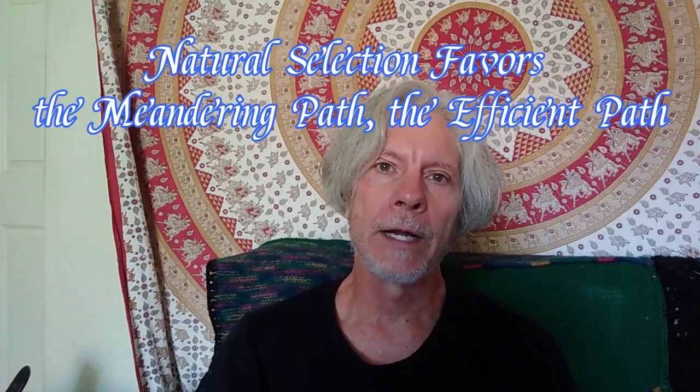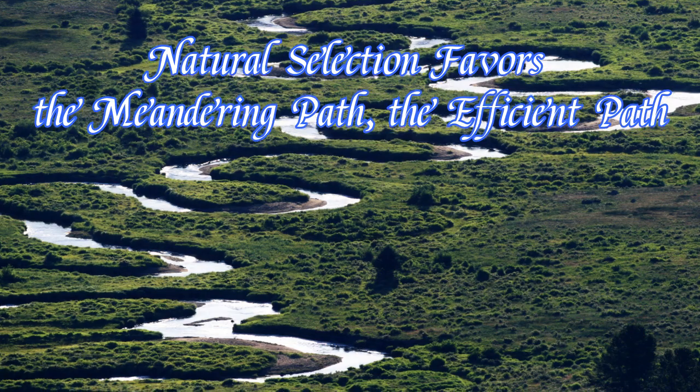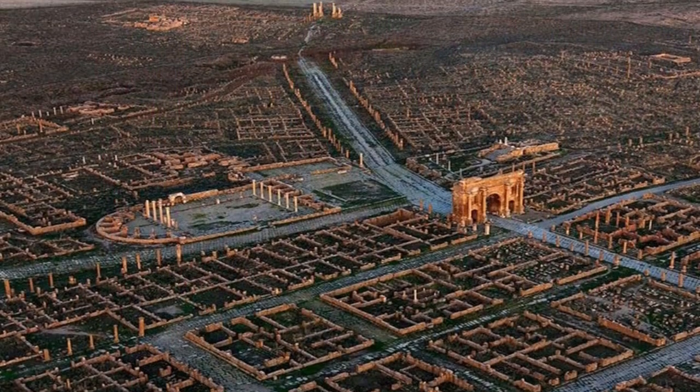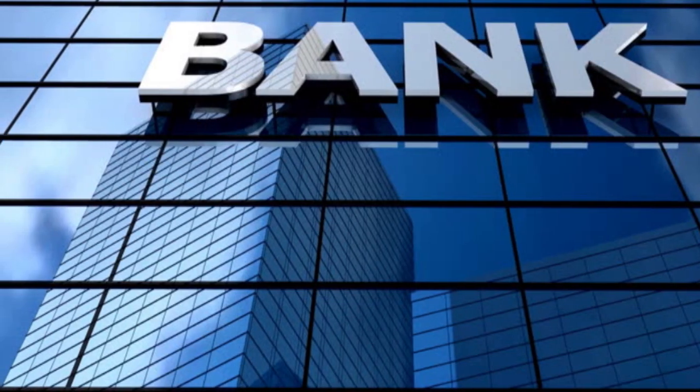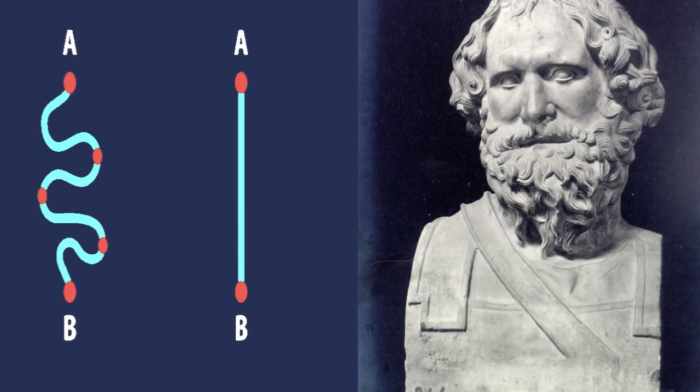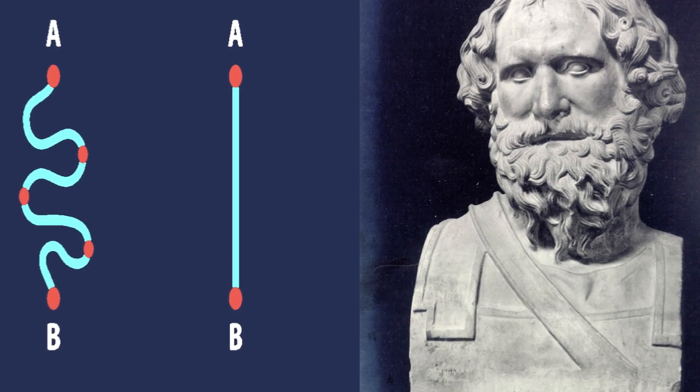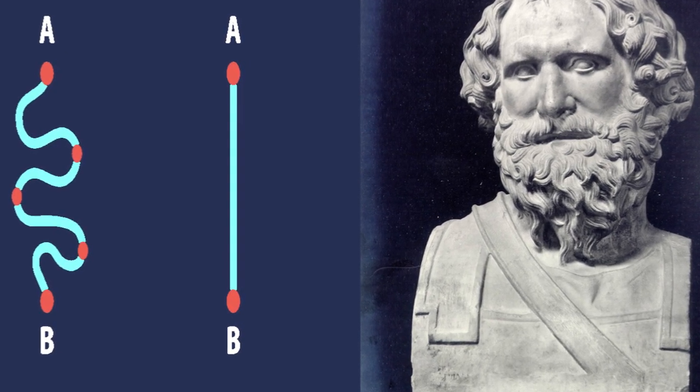Lately, I've been thinking about straight and squiggly lines. How you don't often see straight lines in nature, yet civilization is full of straight lines. And I see a relationship between straight lines and money, the prevalence of straight lines and money. We think of the straight line as the most efficient line there is. In the third century BCE, Archimedes said the shortest distance between two points is a straight line, and we figure the shortest distance is the most efficient.